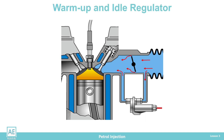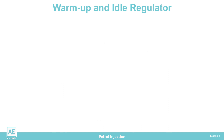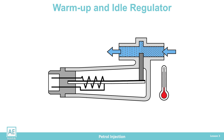In the first injection systems, the regulator on the bypass line served only for the initial warm-up phase when the engine is cold. The basic element of this regulator is bimetal, which, depending on the temperature, regulates the position of the valve on the bypass line.